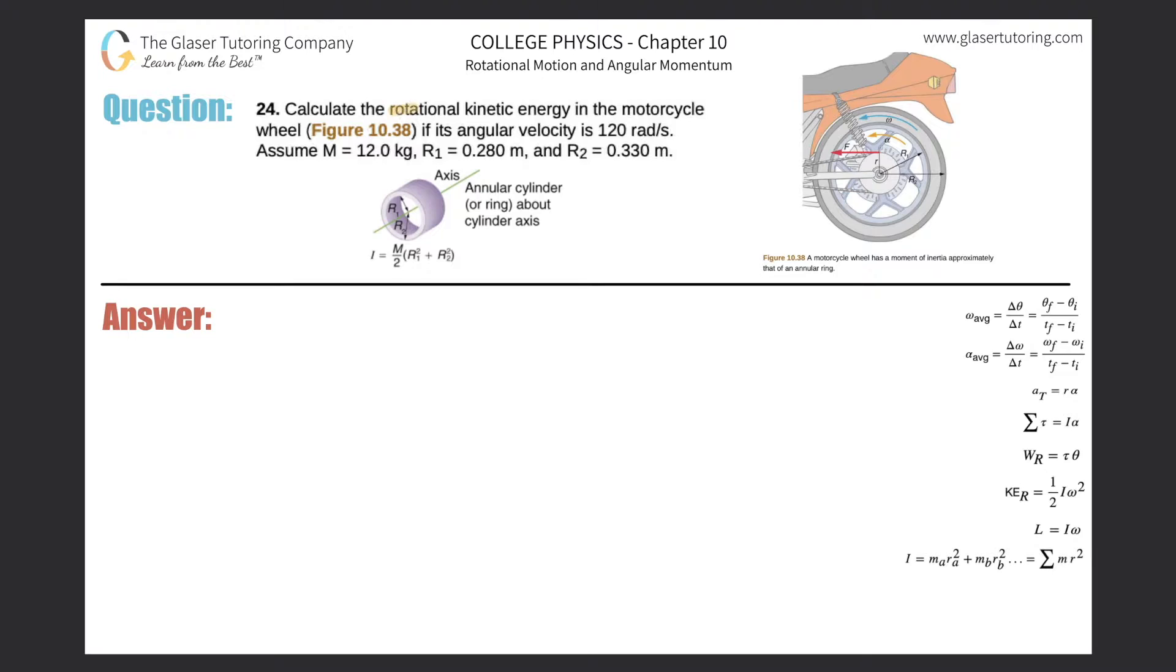Number 24. Calculate the rotational kinetic energy in the motorcycle wheel, figure 10.38, if its angular velocity is 120 radians per second. Assume the mass is 12 kilograms, the inner radius is 0.28, and the outer is 0.33.